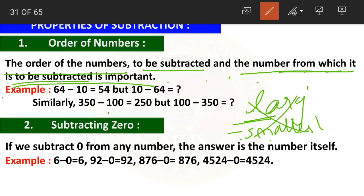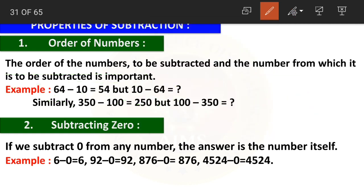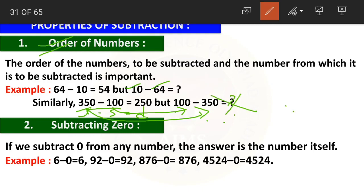Here are examples: 64 minus 10 is 54 — larger minus smaller. But if I change the order, 10 minus 64 equals what? We cannot answer, because 10 is the smaller number and 64 is the larger number; it is not possible. Similarly, 350 minus 100 equals 250, but 100 minus 350 — we don't know and cannot say, because here we are doing smaller minus larger, which is not possible. The order of numbers is important in subtraction.